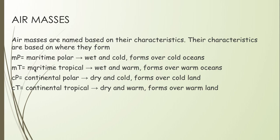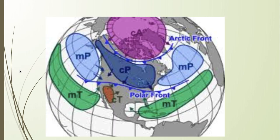Continental polar (CP) is dry and cold and forms over cold land. Continental tropical (CT) is dry and warm and forms over warm land. 'P' stands for polar — it's cold. 'T' stands for tropical — it's warm. On a map, you'd be able to identify these: MP is over the ocean far north, CT is over land and hot because it's closer to the equator.